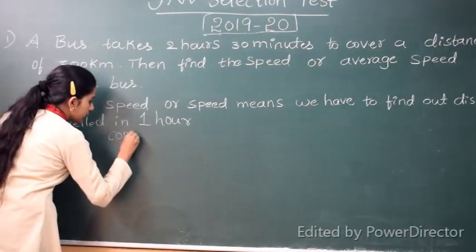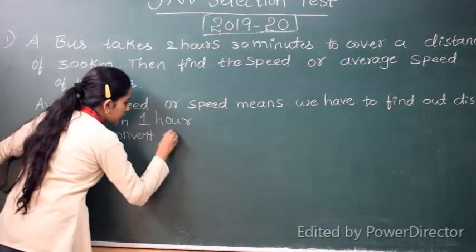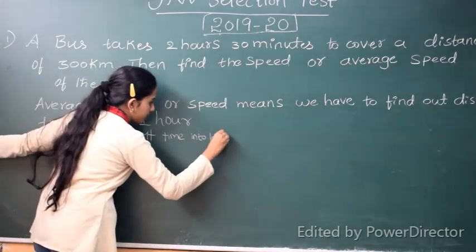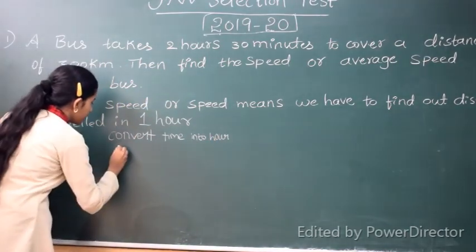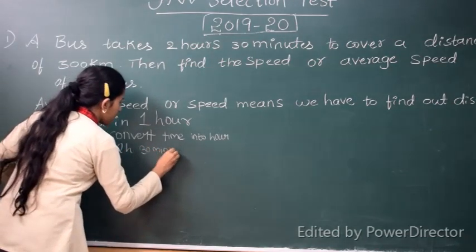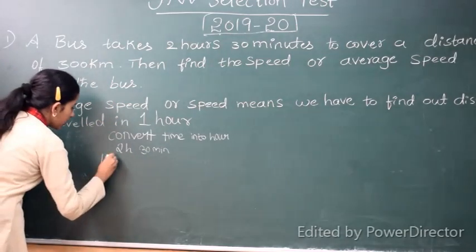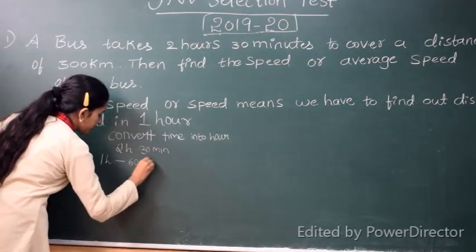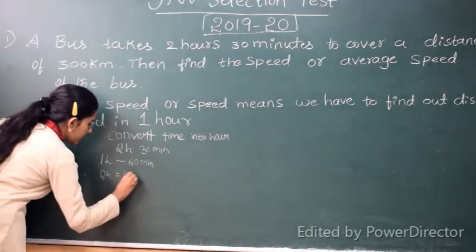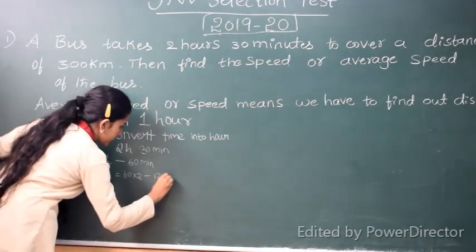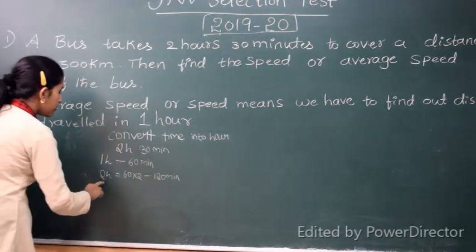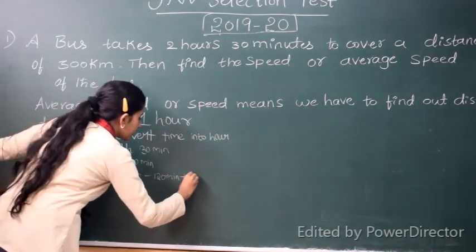So 2 hours 30 minutes is the time given. We know that 1 hour is equal to 60 minutes. So 2 hours is equal to 60 into 2, that is 120 minutes. According to the question it is 2 hours 30 minutes. So 2 hours is equal to 120 minutes plus 30 minutes.